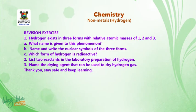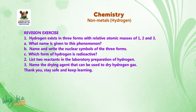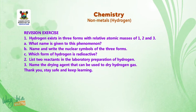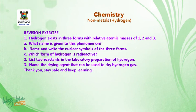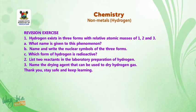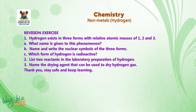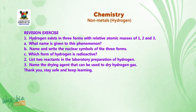Revision exercise: 1. Hydrogen exists in three forms with relative atomic masses of 1, 2 and 3. A. What name is given to this phenomenon? B. Name and write the nuclear symbols of the three forms. C. Which form of hydrogen is radioactive? 2. List two reactants in the laboratory preparation of hydrogen. 3. Name the drying agents that can be used to dry hydrogen gas.